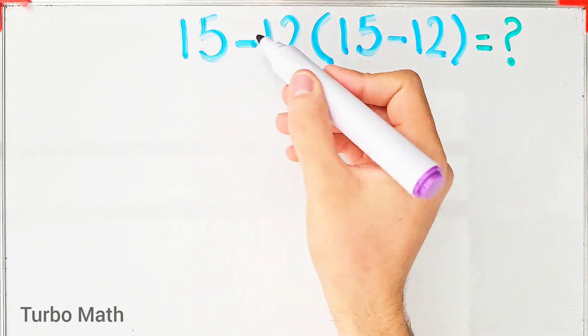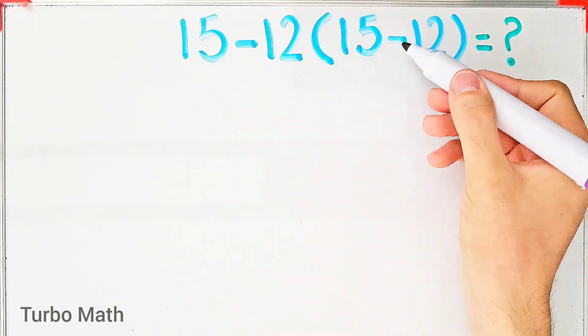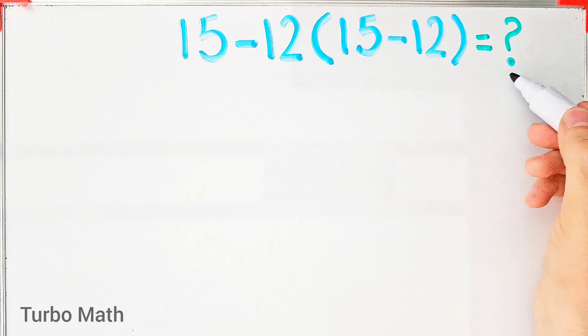15 minus 12, then times 15 minus 12. What is the answer to this question? Can you solve it?